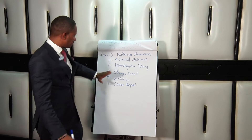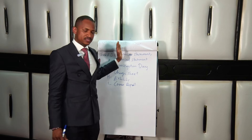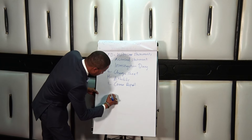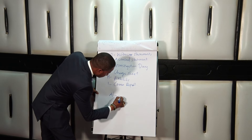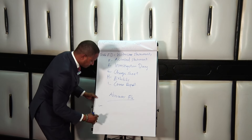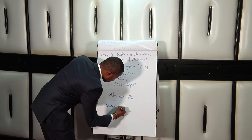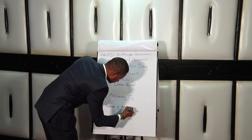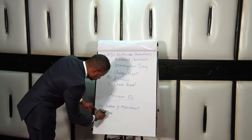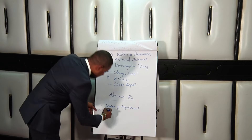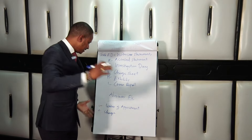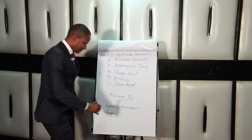Once we've dealt with that, we have another file called the advocates file. In the advocates file, number one, we have a letter of appointment — that the client appointed an advocate to handle the case. Number two, we have a charge sheet. This one can be in any particular order; you can arrange it flexibly.